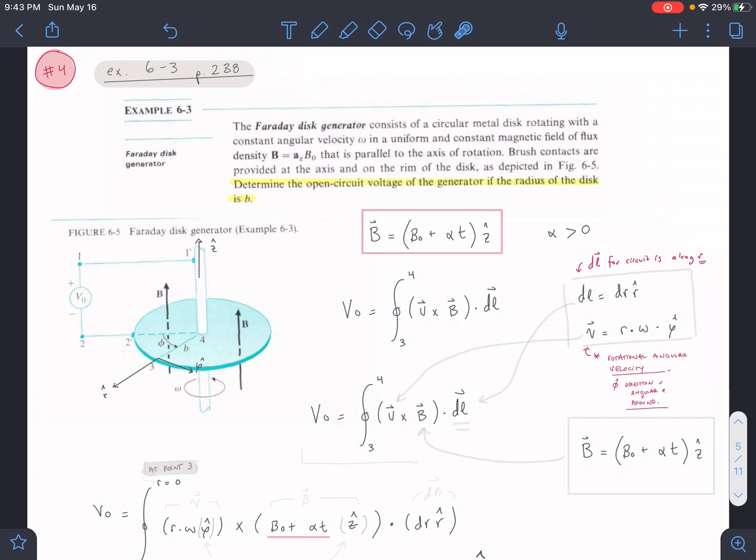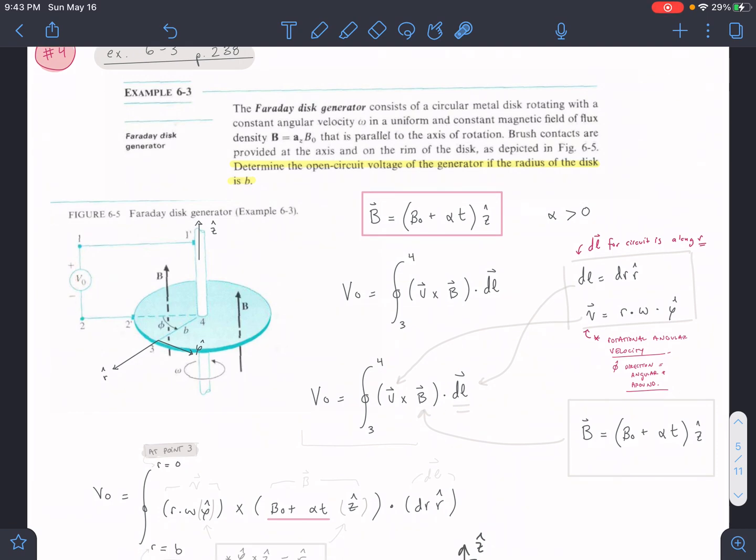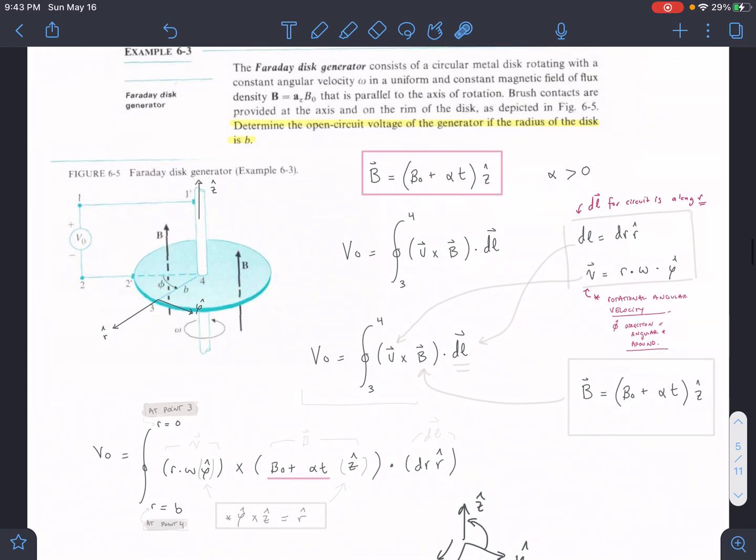The problem is asking us to find the open circuit voltage of the generator with a radius of b. Okay, so we have a circuit that we completed here and we have a disk that is rotating through a B field. That disk is going to induce a current, essentially, or induce a voltage. So we have this general equation right here.